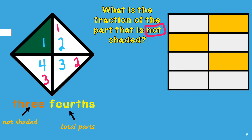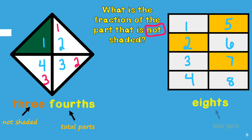Let's look at this example now. To get the fraction of the unshaded or uncolored part, we will first start by counting the total number of parts: one, two, three, four, five, six, seven, eight. There are eight parts so this shape is partitioned into eighths. This number represents the total number of parts.